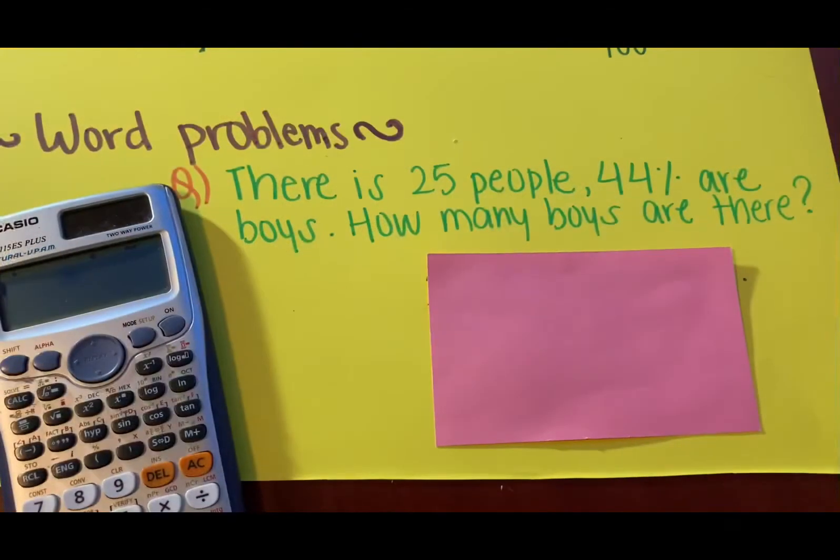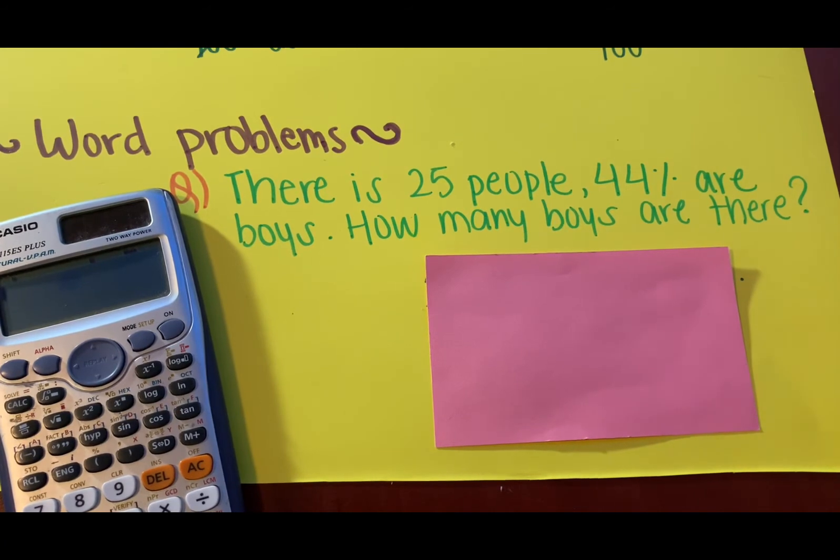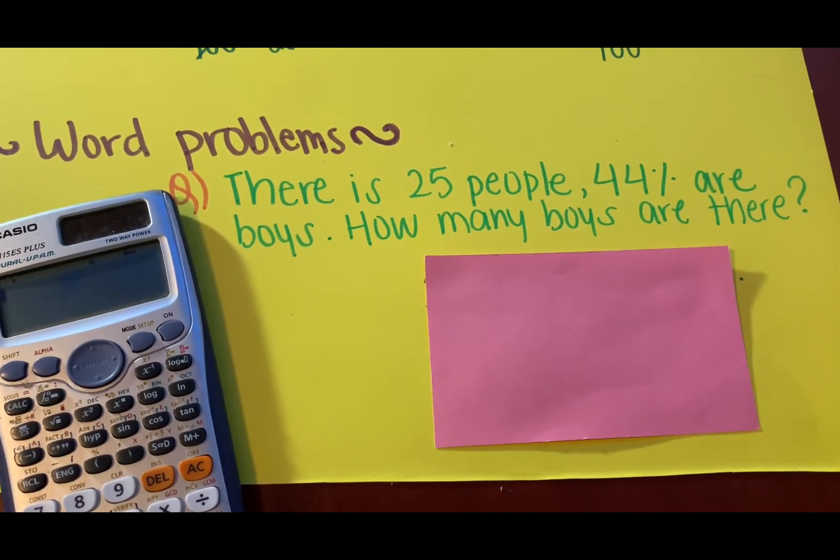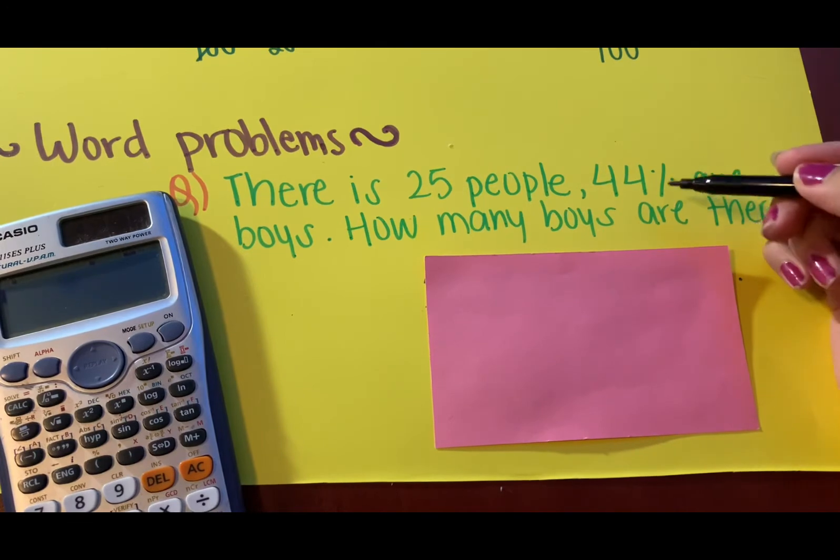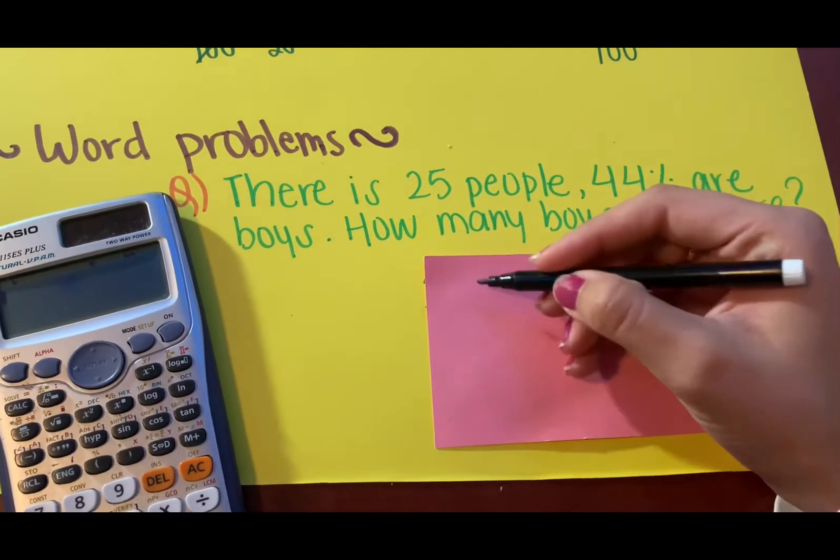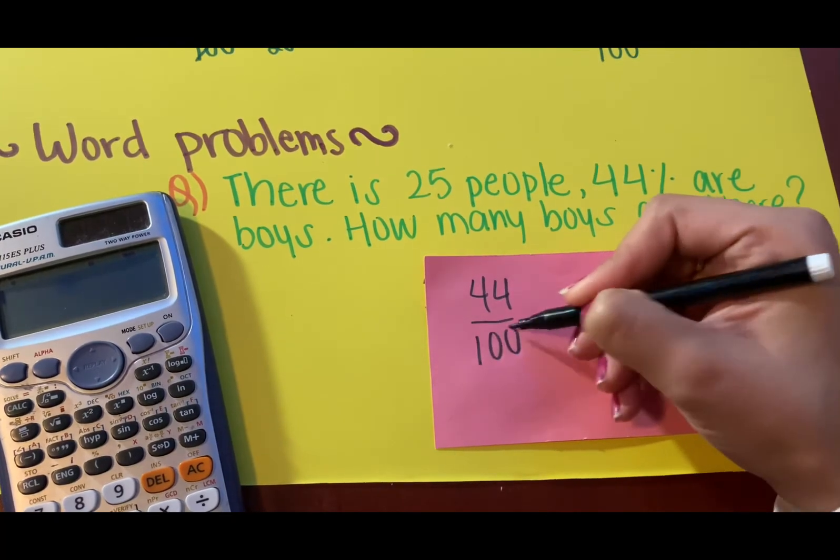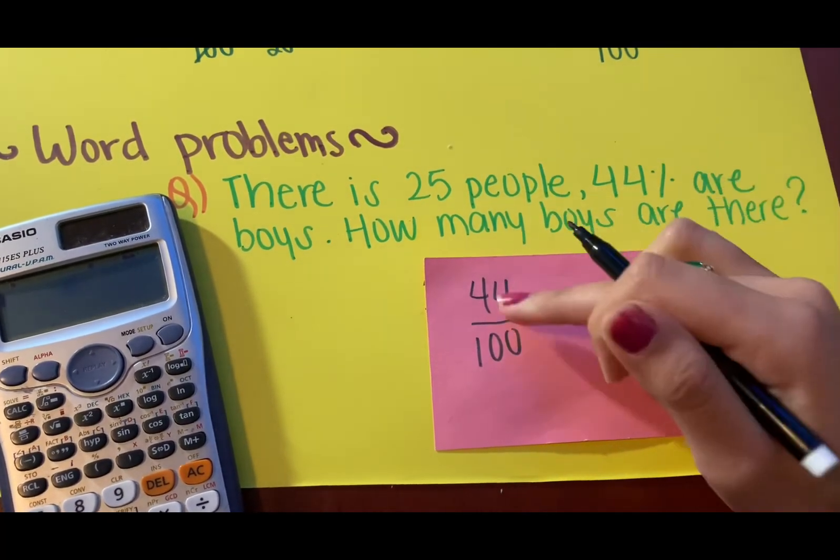Next question. It says there is 25 people in the room and 44% of them are boys. The question says how many boys are there out of those 25 people? Very easy question. So whenever you see the percent, the first step that has to come in your mind is just put it in a fraction. It just makes it easier to see the problem and solve it. So 44 divided by 100. So out of 25 people, this percent are boys.